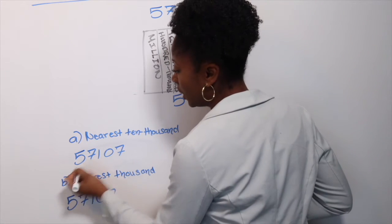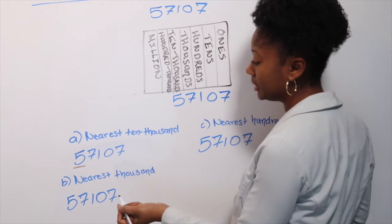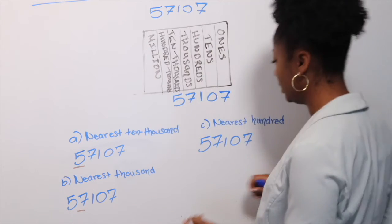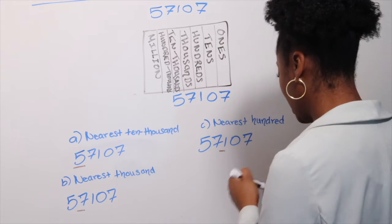Okay, so therefore, I'm just going to underline each one. This one is a 10,000, this one is a 1,000, and then this one is the 100.